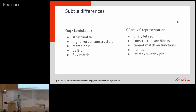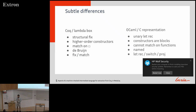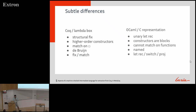In OCaml and in the Lambda intermediate language of the compiler, things are different. You don't have a structural fix; you have let rec, which will reduce once there's an argument — you don't have to wait for the structural argument. Constructors are blocks; you cannot map cons over a list in OCaml without writing a wrapper function. You cannot match on functions. We're implementing box as a function in OCaml using a fixed point, because that gives the right rules. Things are specified in a named way, and instead of a match construct you project out using a switch and a projection.